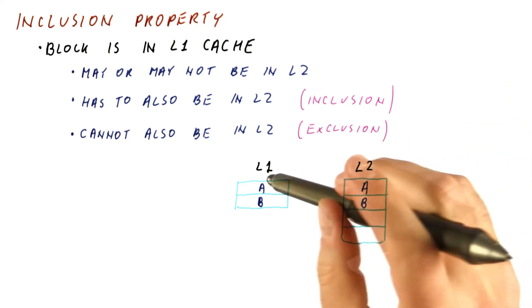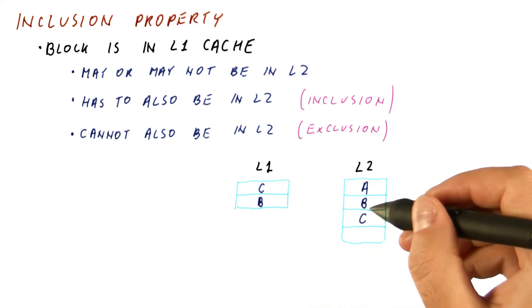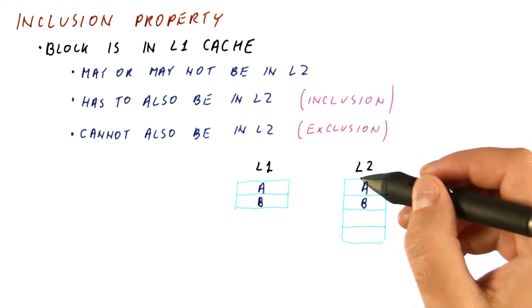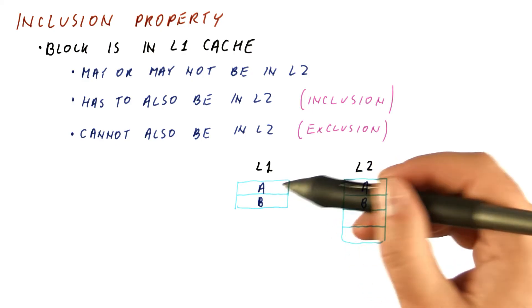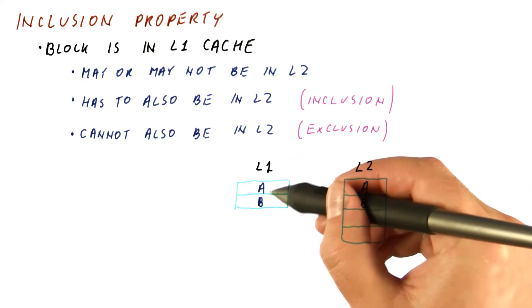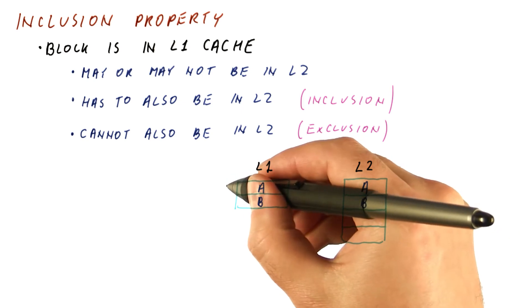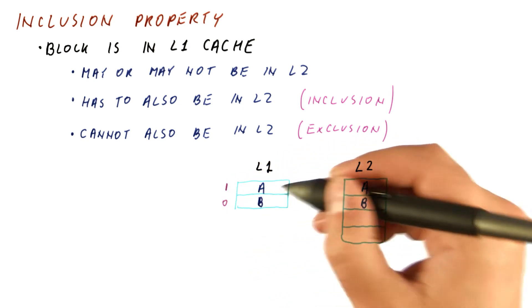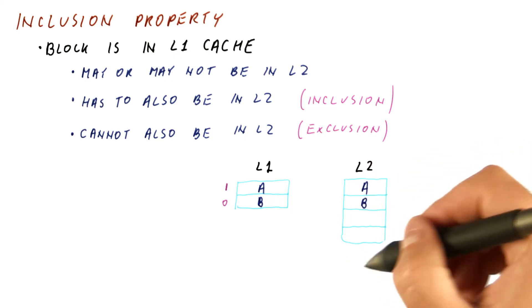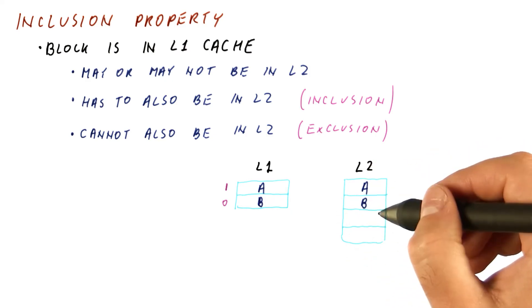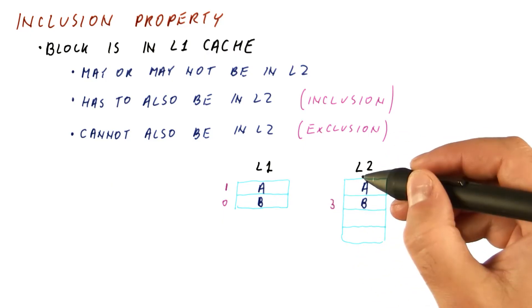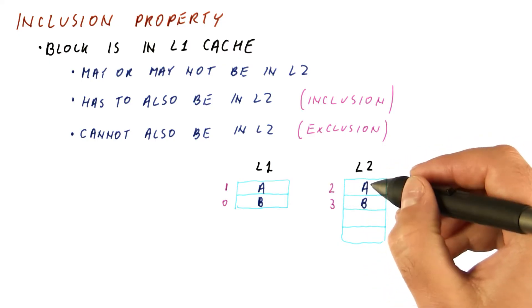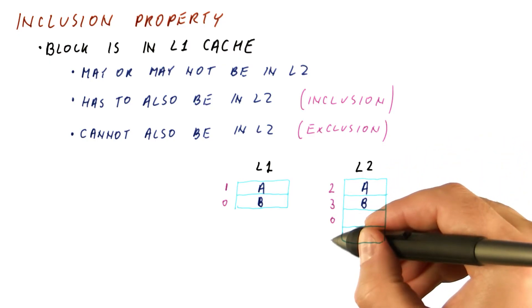If we now access block C, it will be here and here, and we still have inclusion. But let's suppose that when we had the blocks A and B brought in, we re-access A. That is going to be a level one hit. So now the LRU counters in level one are this. But because there has been no access when A was re-accessed to level two, because it was a level one hit, so we don't go to L2. Here we still have that B is the most recently accessed, A is the next most recently accessed, and let's say these two are like this.